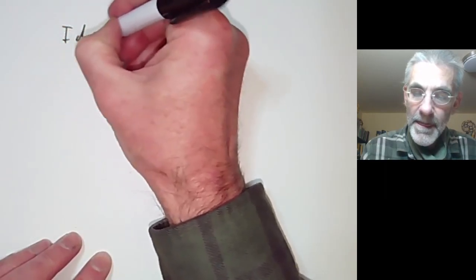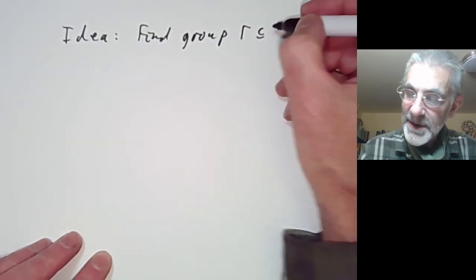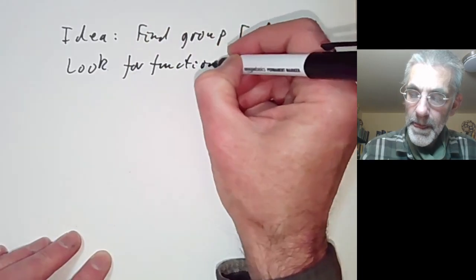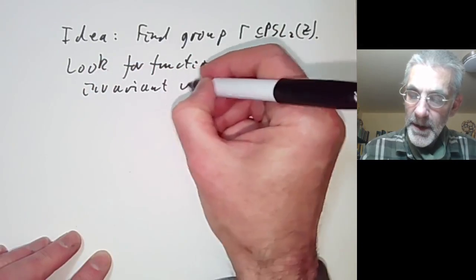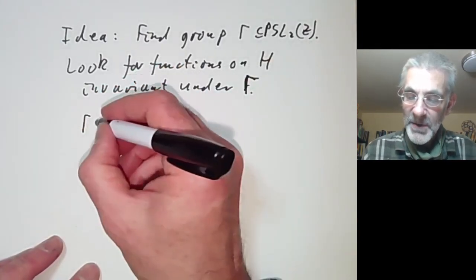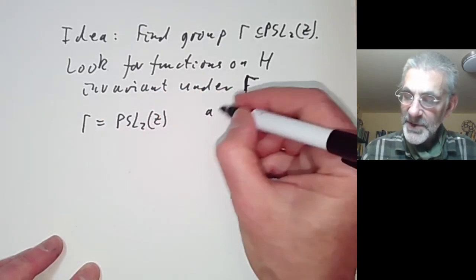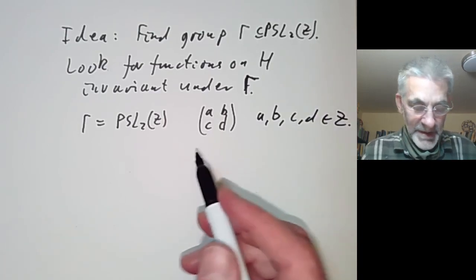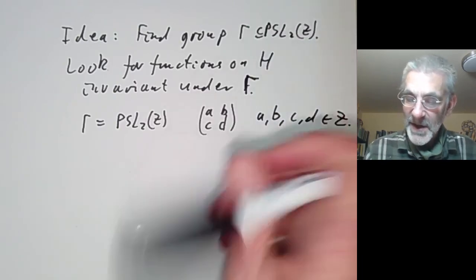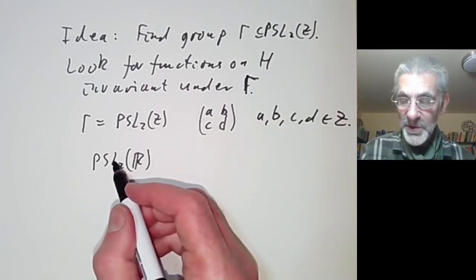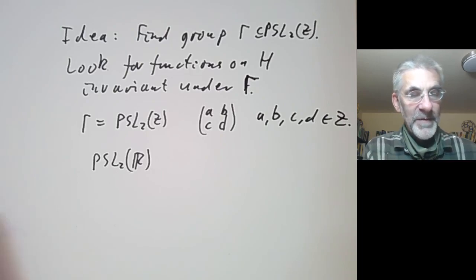The symmetries of the upper half plane are much easier to describe: they form the group PSL₂(ℝ), consisting of 2×2 matrices (a b; c d) with ad − bc = 1, modulo the subgroup {±I}. This acts on H by (a b; c d) · τ = (aτ + b)/(cτ + d). The maximum modulus principle tells us PSL₂(ℝ) is the full group of symmetries of the upper half plane. This is used extensively in the theory of modular forms: one takes a subgroup Γ ⊂ PSL₂(ℤ) — for example Γ = PSL₂(ℤ) itself, all integer matrices — and studies holomorphic functions on H invariant under Γ. These are called modular functions and are very rich objects.